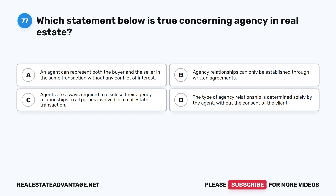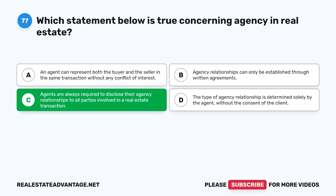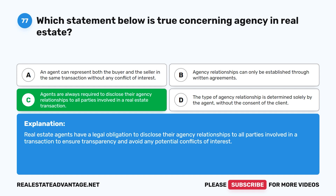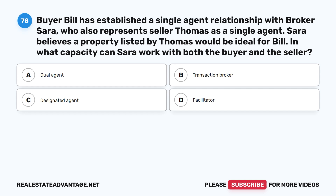Question 77: Which statement below is true concerning agency and real estate? A. An agent can represent both the buyer and the seller in the same transaction without any conflict of interest. B. Agency relationships can only be established through written agreements. C. Agents are always required to disclose their agency relationships to all parties involved in a real estate transaction. D. The type of agency relationship is determined solely by the agent without the consent of the client. The correct answer is C. Real estate agents have a legal obligation to disclose their agency relationships to all parties involved in a transaction to ensure transparency and avoid conflicts of interest.